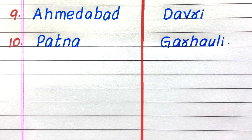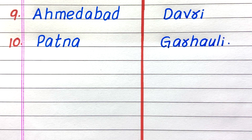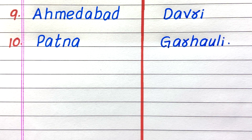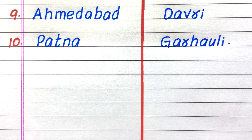The 9th name of a city in India is Ahmedabad, and the 10th name is Patna. The 9th name of a village in India is Davri, and the 10th name is Garauli.